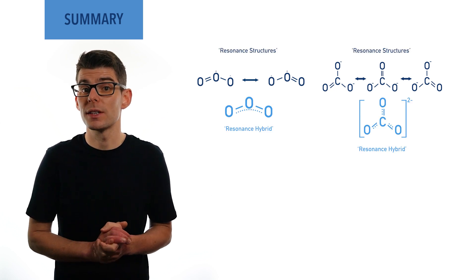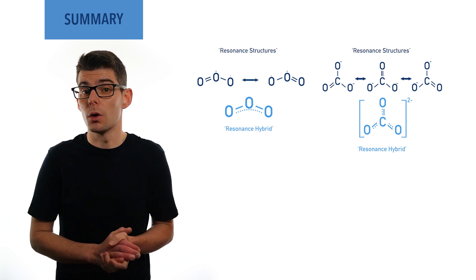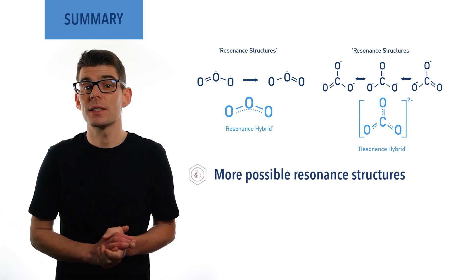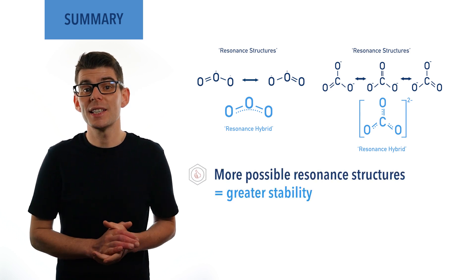In general, the more possible resonance structures that a molecule or ion can have, the greater its stability and the more likely it is to exist.